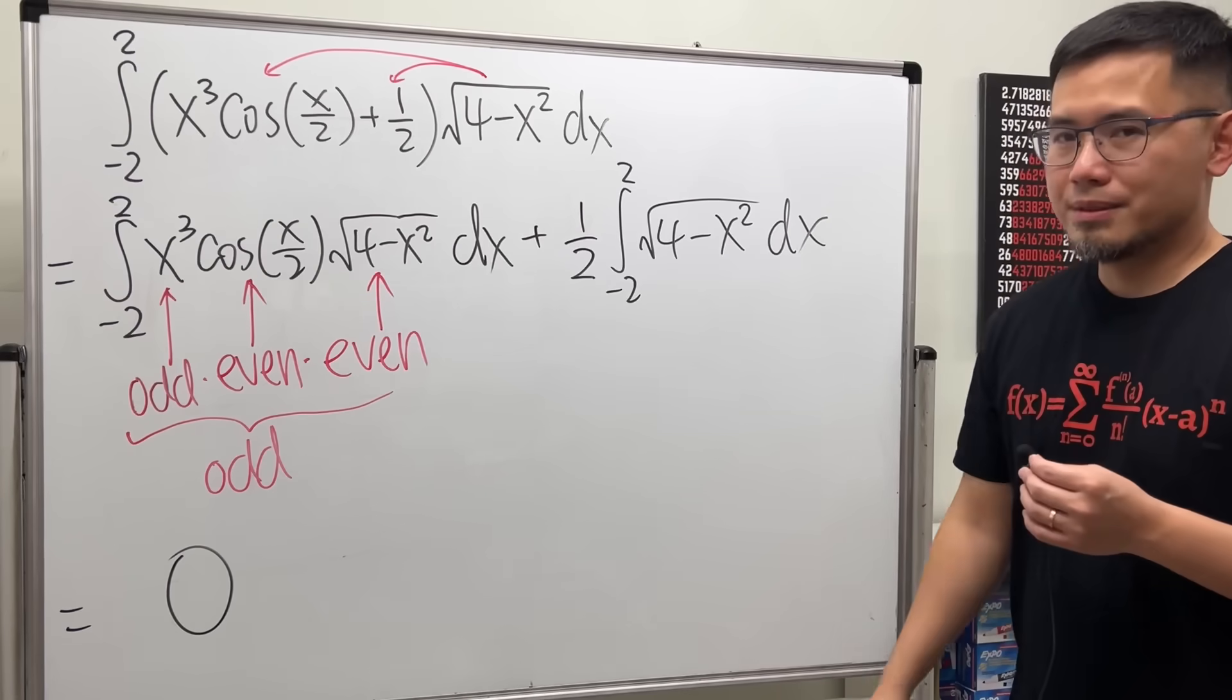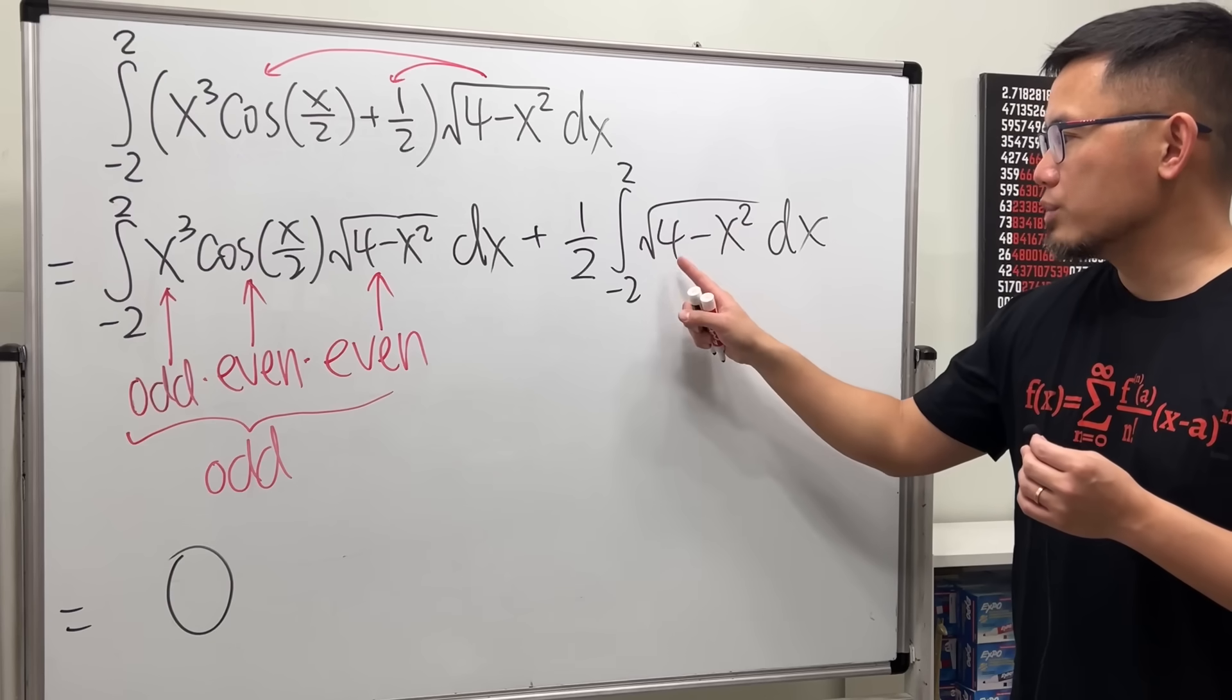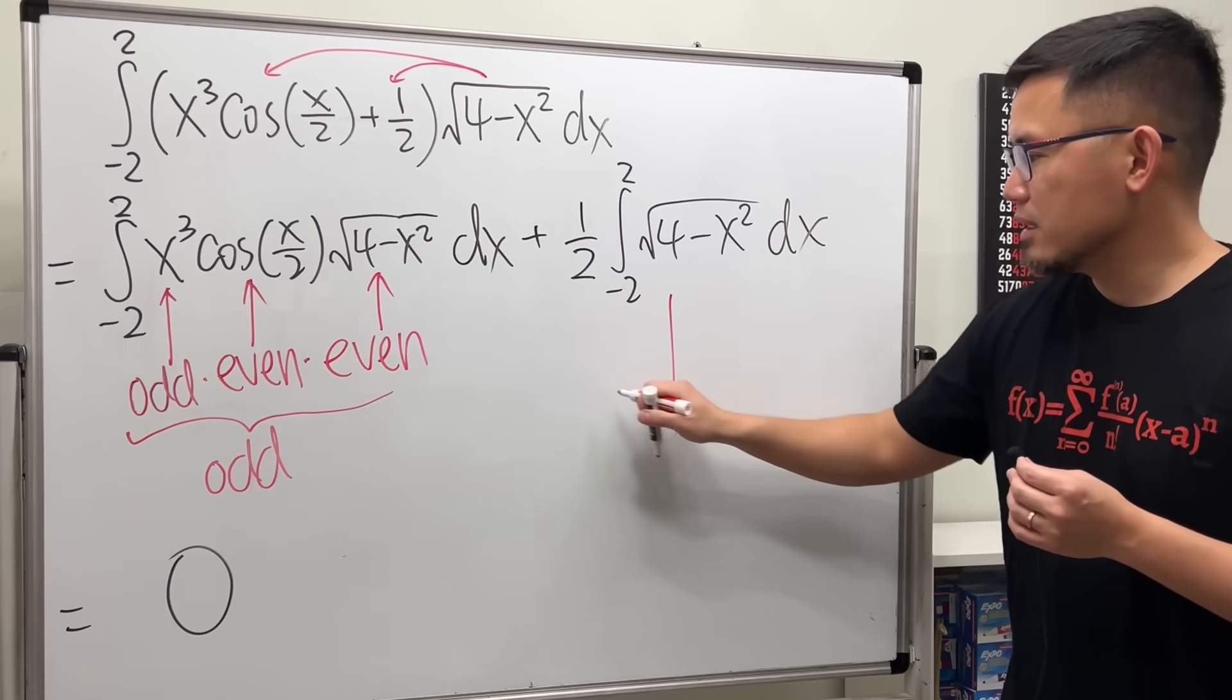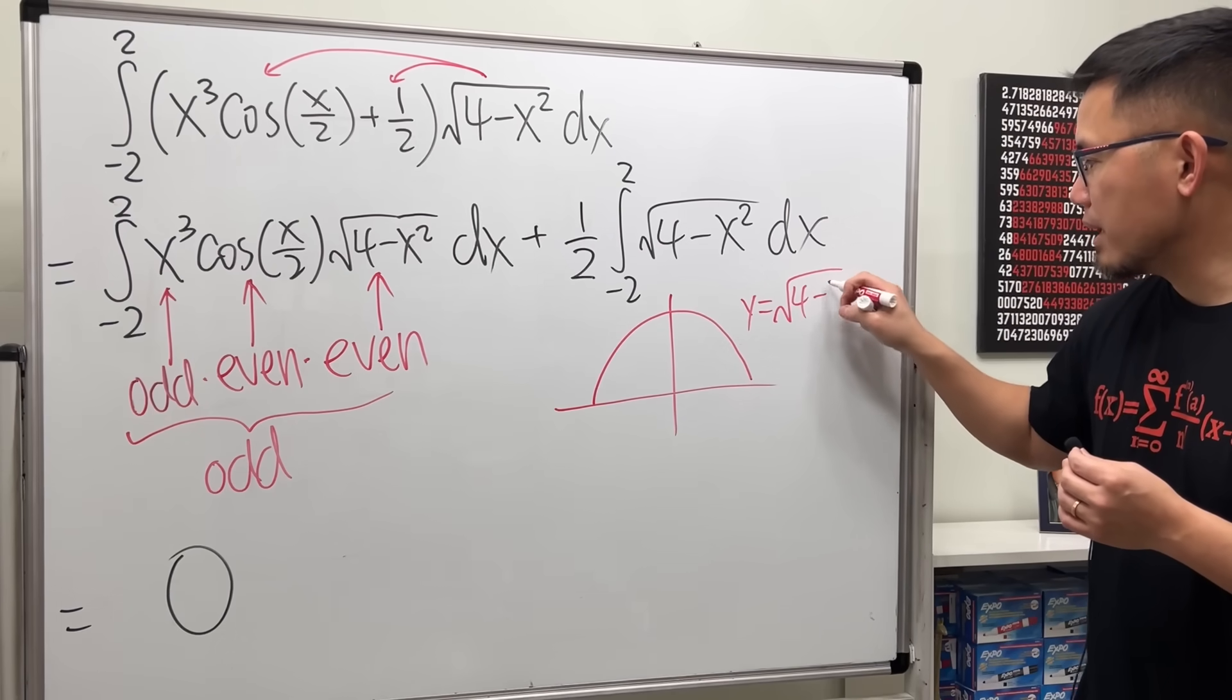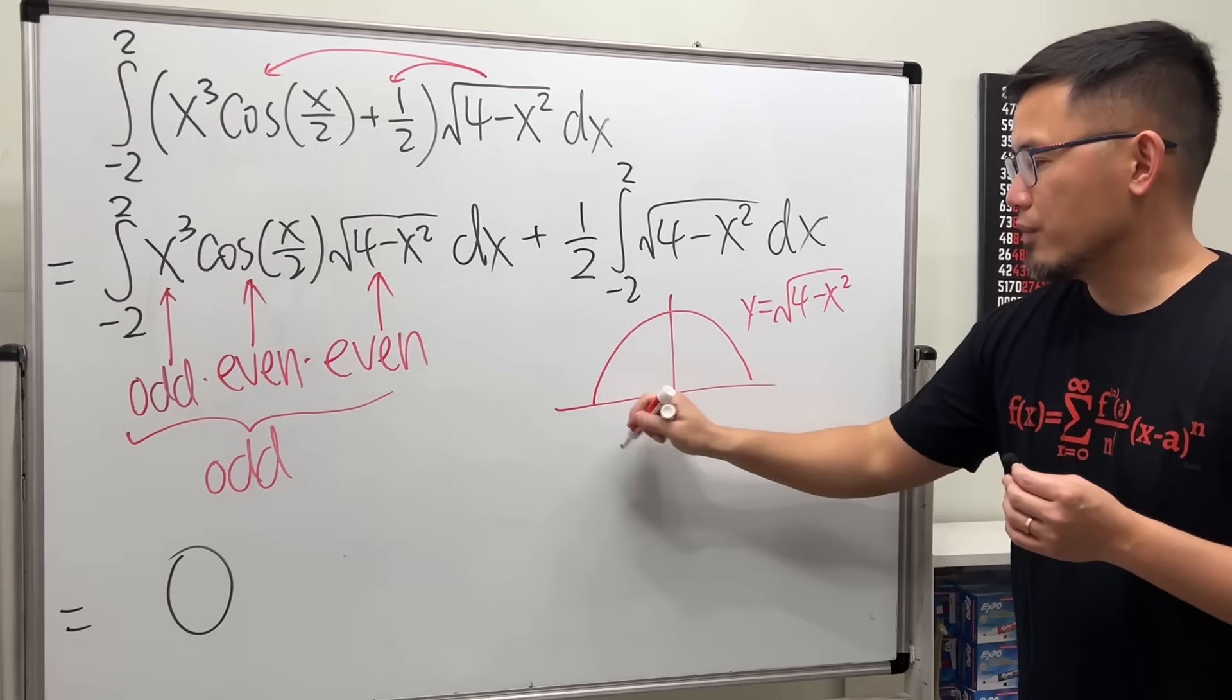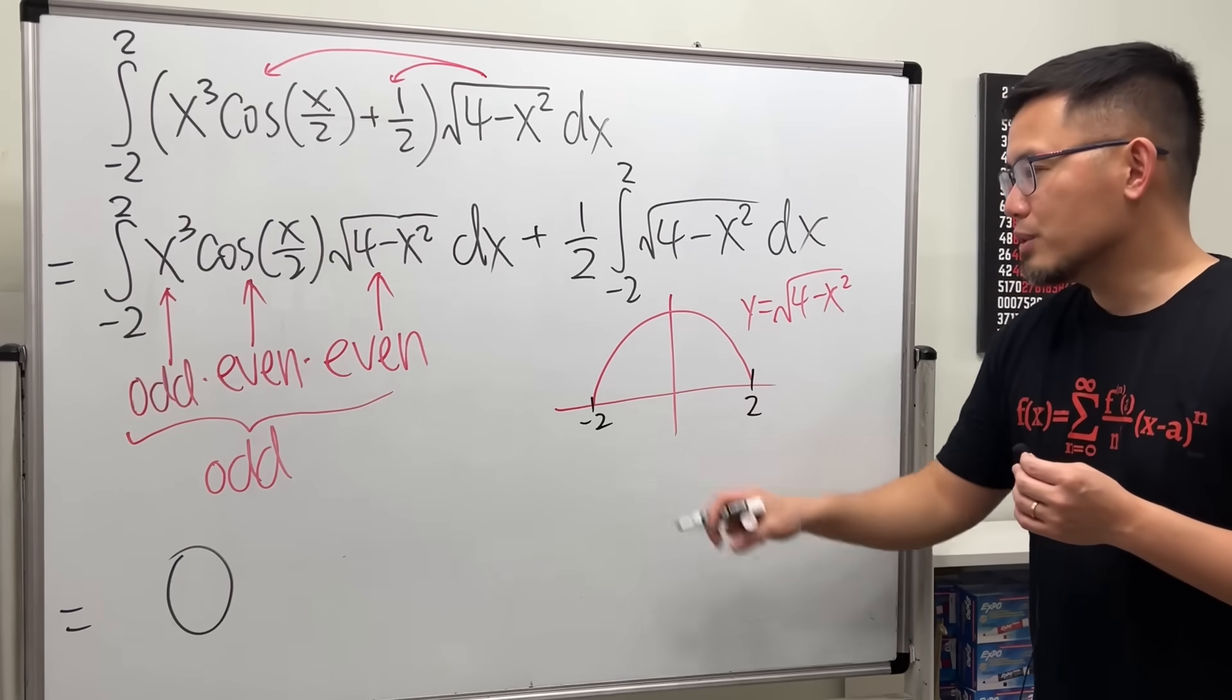Now for the second part, how do we do it? Let's talk about the graph for square root of 4 minus x squared. This right here, in fact, is just a semicircle. This is the graph of y equals square root of 4 minus x squared. The radius is 2, so that means we go from negative 2 to 2.